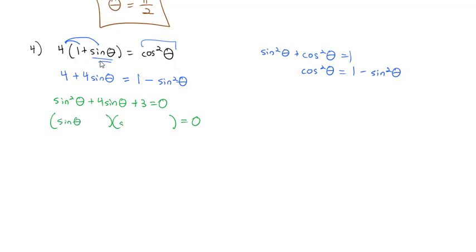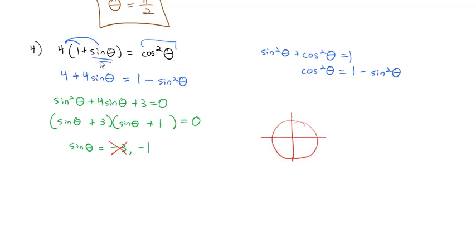Factoring: sin²θ factors as sinθ · sinθ, and 3 is 3 × 1, everything positive. So we get (sinθ + 3)(sinθ + 1) = 0, meaning sinθ = −3 or sinθ = −1. Since sine is never less than −1, the only solution is sinθ = −1. The y-coordinate is −1 at 3π/2, so θ = 3π/2.